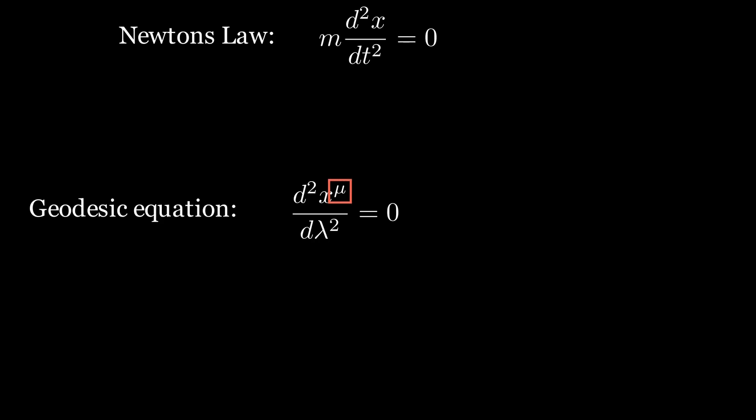Our next task is to figure out what this mu symbol means. It is not an exponent. Mu is an index that labels certain coordinates. It can range from zero to three. Mu zero is taken to be the time coordinate, and mu one, two, and three are taken to be the three spatial coordinates. Of course, since we are in the Cartesian system, the three spatial coordinates are x, y, and z. What you are really then seeing with this equation is actually four different equations, one for each dimension.